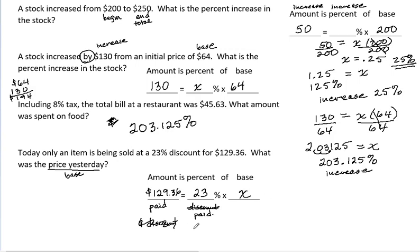So instead, I need to change the percent from being the percent discount to being the percent paid. So if I got 23% off, then I have full price would be 100%. Take off 23% means that I end up paying the other 77%.